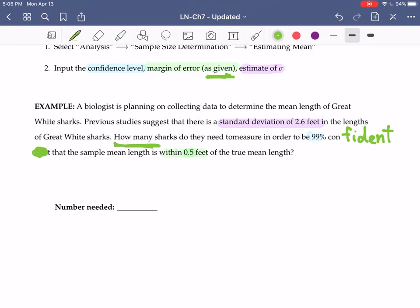We are trying to estimate a mean. We need to know how many, and we are given here the standard deviation, sigma, is going to be 2.6. We are given the confidence level is 99%, 0.99, and we want to be within 0.05 feet. So our margin of error is 0.5.